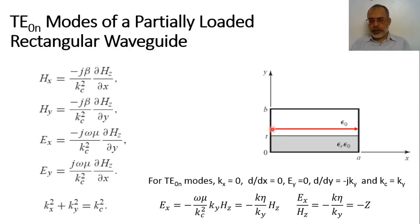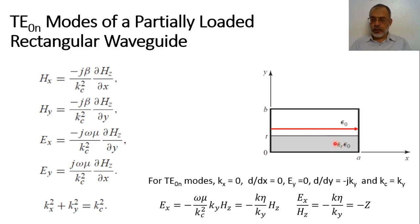For the TE zero-n mode, we are looking at this structure as a transmission line section — a parallel plate transmission line section with a short circuit here, and another parallel plate transmission line section with a short circuit there. The difference between the two transmission line sections is that the dielectric material in one is air with permittivity epsilon_0, while the dielectric material in the other has relative permittivity epsilon_r, giving dielectric constant epsilon_r times epsilon_0.